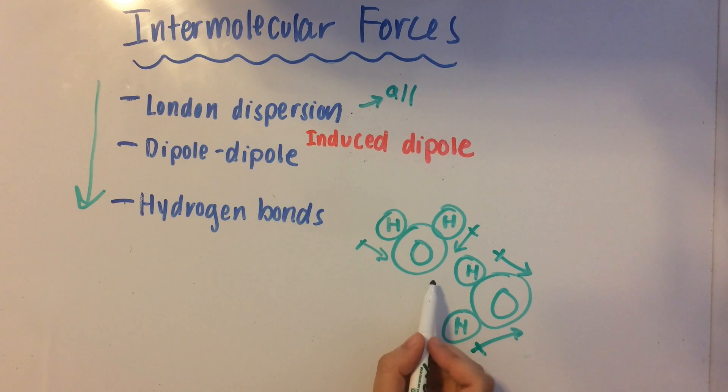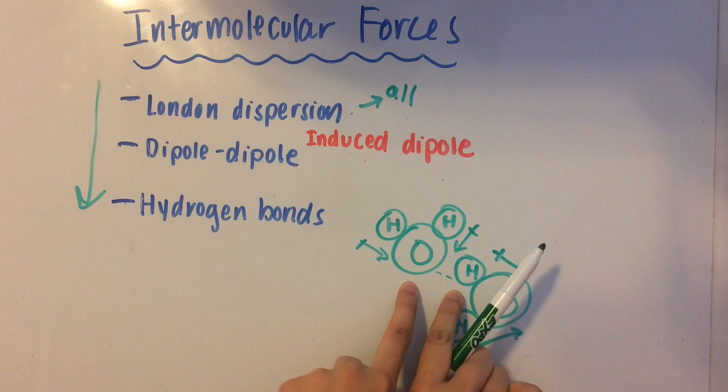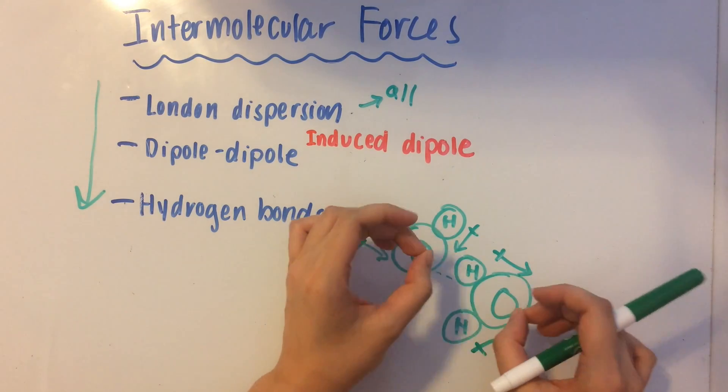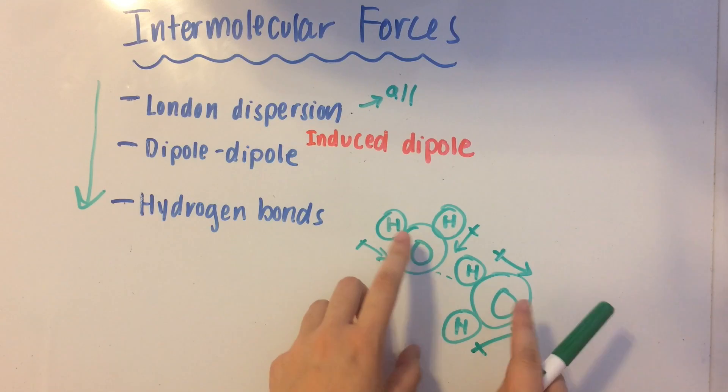So now, there's going to be a temporary attraction between oxygen and hydrogen. Because remember, oxygen has a partial negative charge, while hydrogen has a partial positive charge. So that's what hydrogen bonds are. They aren't bonds in between the water molecule. They're bonds in between the actual different molecules, not between the atoms.